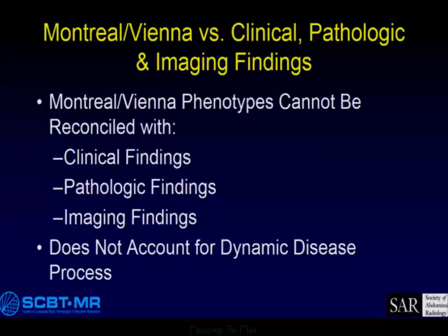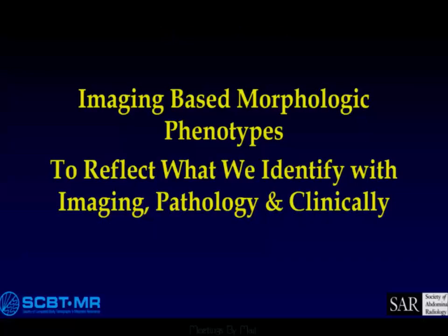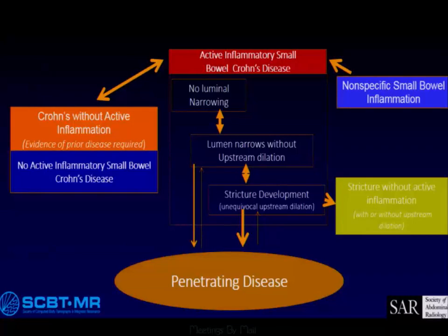The Montreal/Vienna phenotypes cannot be reconciled with clinical findings, pathologic findings, or imaging findings, and do not account for the dynamic process. Here is a large, busy slide with all the terms that will be defined in the paper. What I really want to focus on is the imaging-based morphologic phenotypes, which will be the impression or conclusion that you draw after you have interpreted your CT or MR enterography. Here's the schemata.